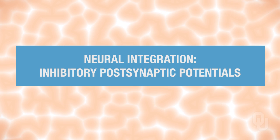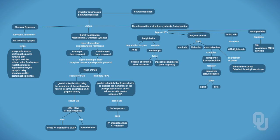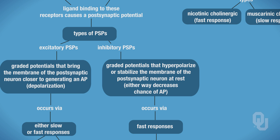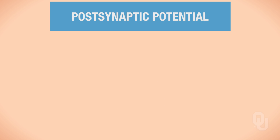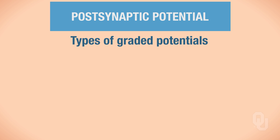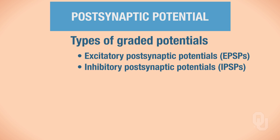In this segment of the Neural Integration Notes, you'll be learning about inhibitory postsynaptic potentials. This uses the same outline from the excitatory postsynaptic potential lecture, but here we'll only be focusing on inhibitory postsynaptic potentials. Be sure you understand channel-linked receptors and G-protein-linked receptors before proceeding. Postsynaptic potentials are types of graded potentials — we've already covered EPSPs, and now we'll focus on IPSPs.